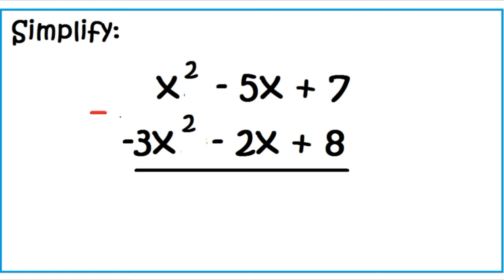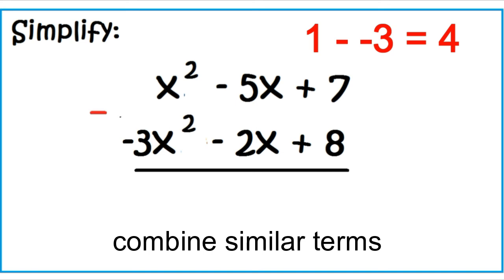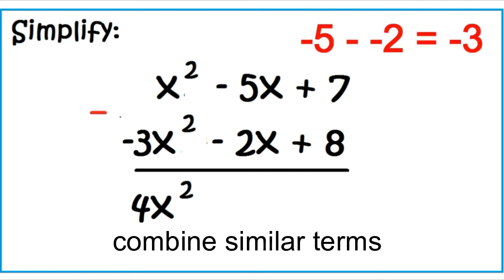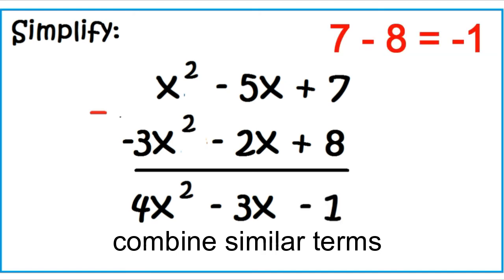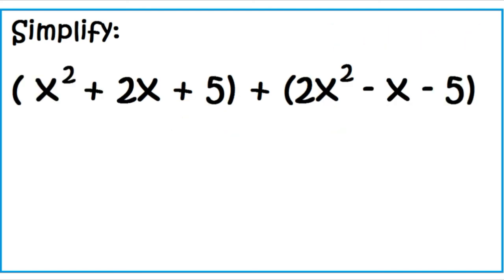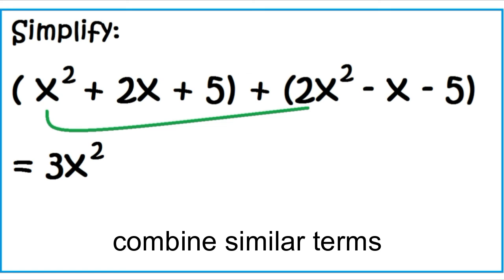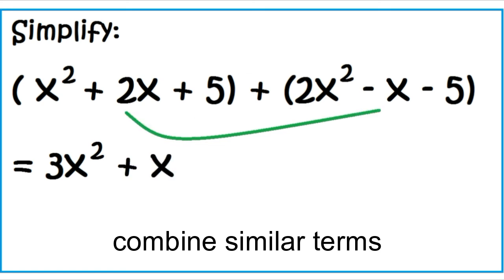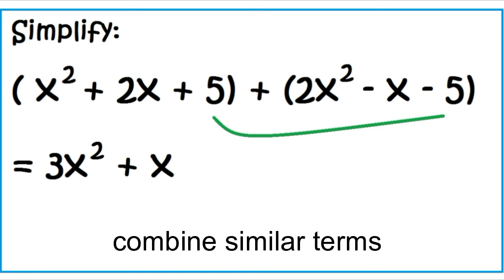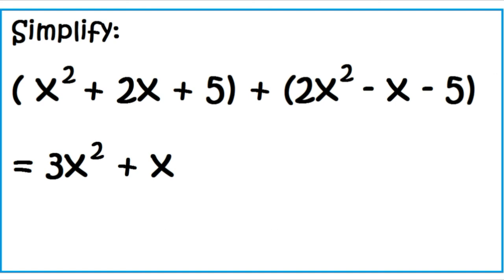Simplify: the quantity X squared minus 5X plus 7 minus the quantity negative 3X squared minus 2X plus 8. X squared minus negative 3X squared is 4X squared. Negative 5X minus negative 2X is negative 3X. 7 minus 8 is negative 1. Simplify: the quantity X squared plus 2X plus 5 plus the quantity 2X squared minus X minus 5. X squared plus 2X squared is 3X squared. 2X plus negative X is X. 5 plus negative 5 is 0. The answer is 3X squared plus X.